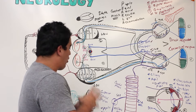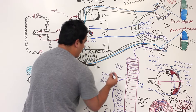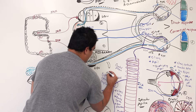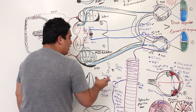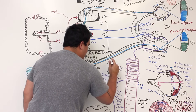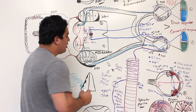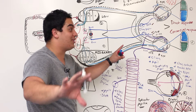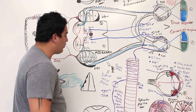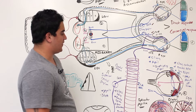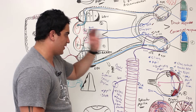Pupil dilation under sympathetic control allows more light rays to enter and focus on a larger portion of the retina, which is advantageous for distance vision and fight-or-flight situations. In summary: sympathetic causes ciliaris to relax, zonules tighten, lens flattens — for distance vision — and pupils dilate. Going from light to dark triggers dilation; dark to light triggers constriction.